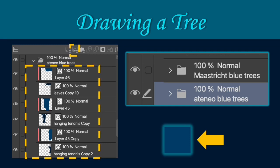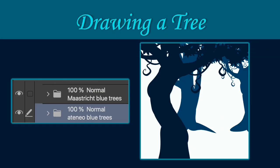Draw another tree in the vector layer using a dark color from your color palette but lighter than the first one. Place the new folder and vector layers below and name it. All the succeeding layers for the background will be placed below. You may place the layers below to keep the trees behind. In my drawing, I used Ateneo Blue to color the trees and placed the folder of the Ateneo trees below to keep the trees behind the darkest tree.